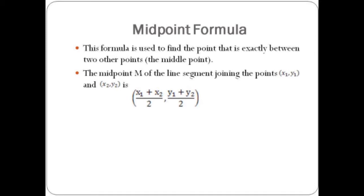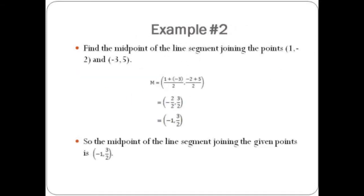Here's an example. Using the points given, we get m equals 1 plus negative 3 over 2 and negative 2 plus 5 over 2. So our x coordinate is going to be negative 2 over 2, which reduces to negative 1, and our y coordinate is going to be 3 halves.